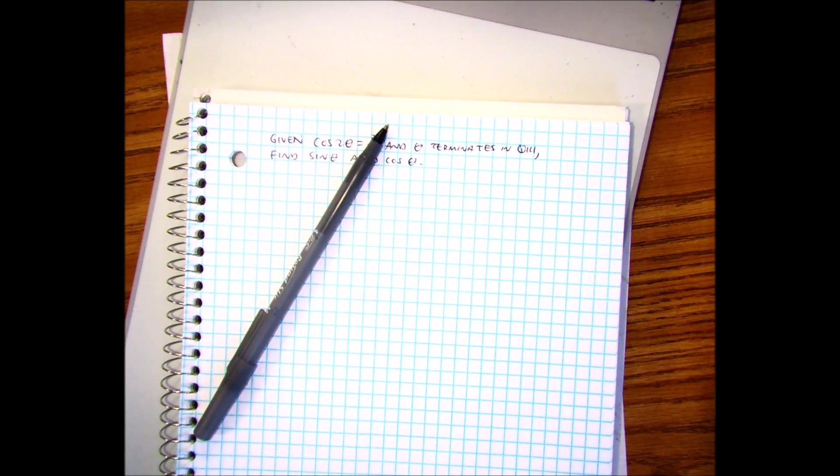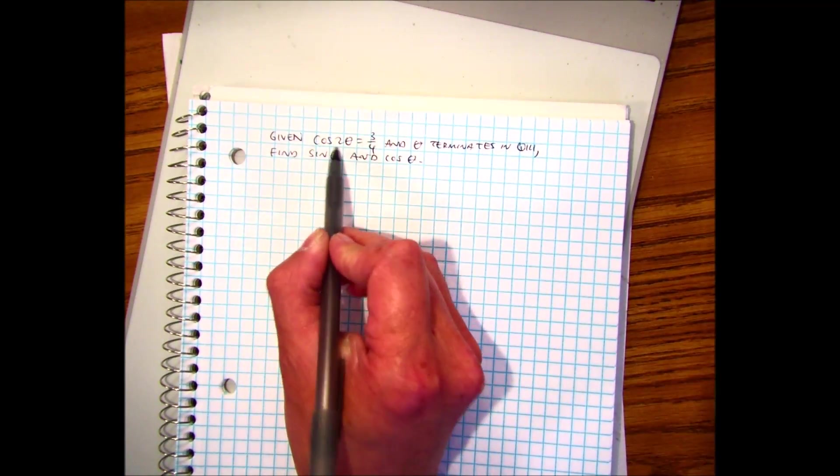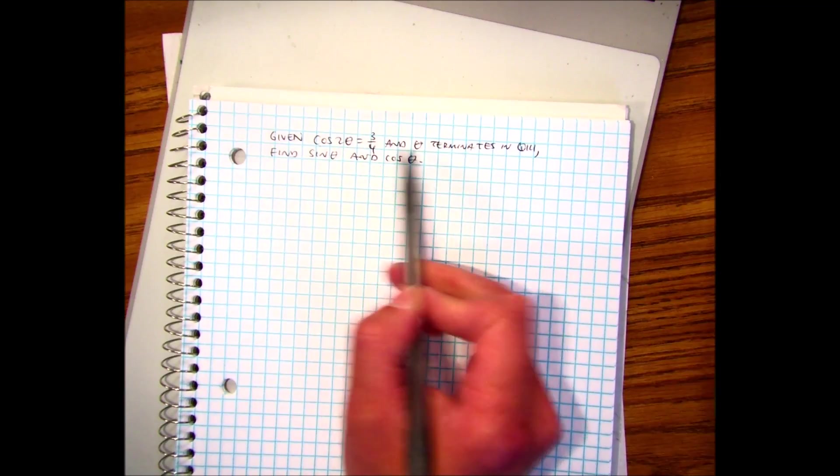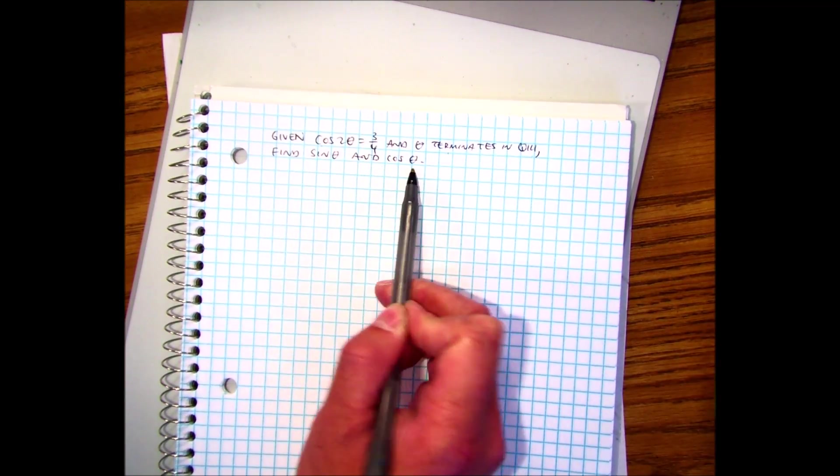Remember this problem? Given cosine of 2 theta equals 3 fourths and theta terminates in quadrant 3, find sine and cosine.